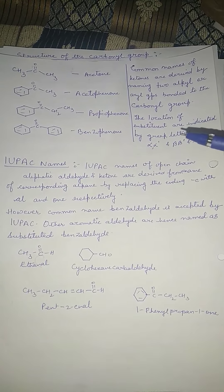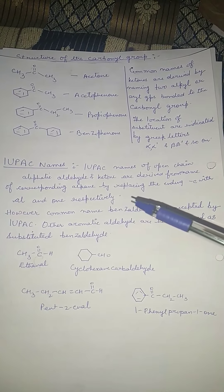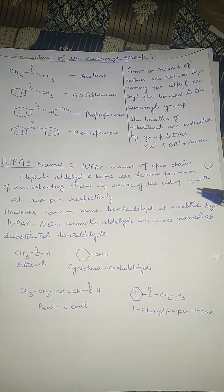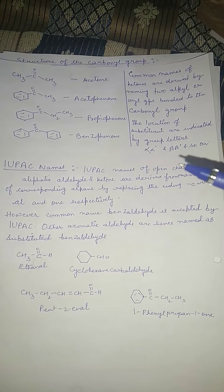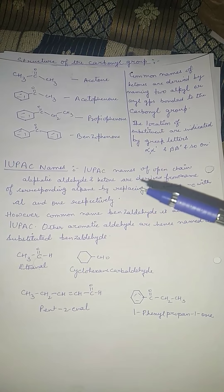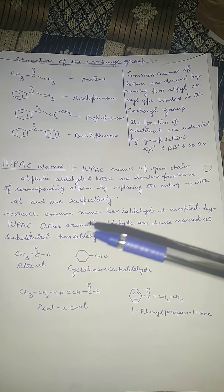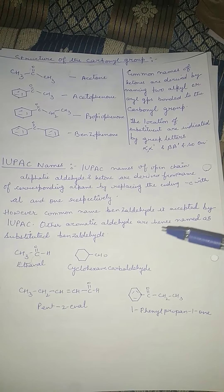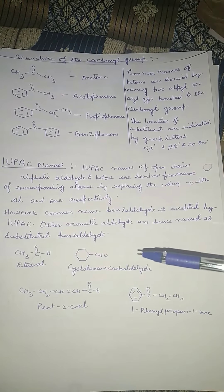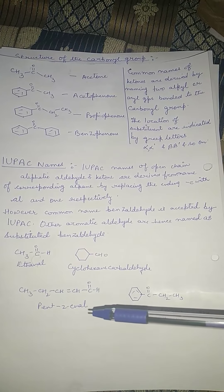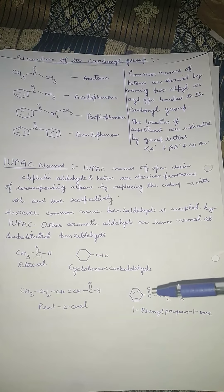For IUPAC names, open-chain aliphatic aldehydes and ketones are derived from the name of the corresponding alkane by replacing the terminal '-e' with '-al' — giving ethanal, propanal, pentanal, hexanal, heptanal, etc. The common name benzaldehyde is also accepted by IUPAC. Other aromatic aldehydes are named as substituted benzaldehydes, and ketones as substituted alkan-ones, for example, 1-phenylpropan-1-one.